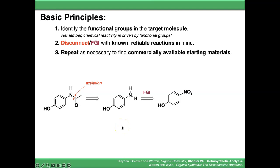Let's do a functional group interconversion. That's the reduction of a nitro group into an amine. And let's do a disconnection here. That's electrophilic aromatic nitration. That gets us back to phenol, which we know is commercially available.